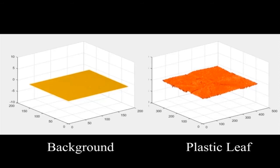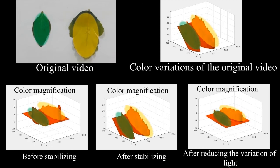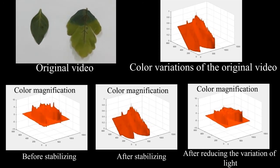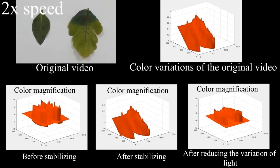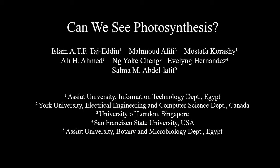By stabilizing the video and reducing the influence of illumination variation of the environment, we can get better results in observing the color changes of our subjects and hence better able to visually study photosynthesis.